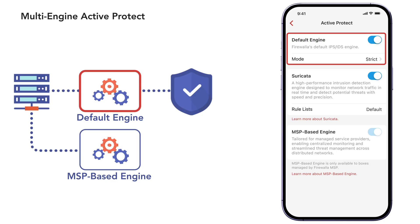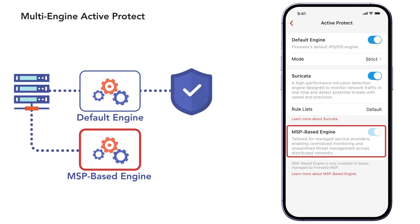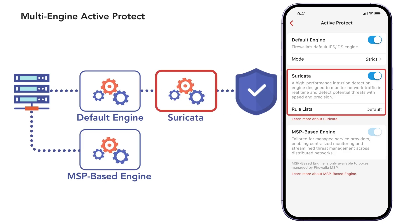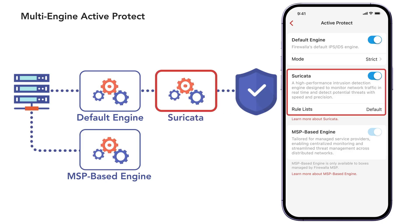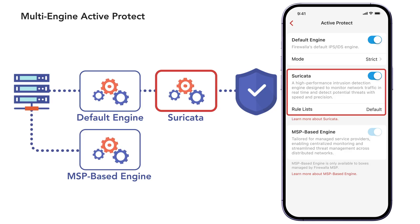Your Firewalla already supports the default Active Protect engine, and if you're subscribed to Firewalla MSP, you can use the MSP-based engine. And now we've added Suricata to the Firewalla Gold Pro — a new signature-based, open-source engine that runs alongside the other Firewalla engines.